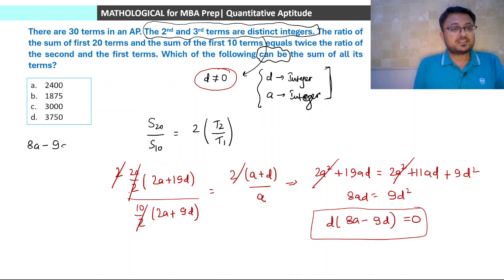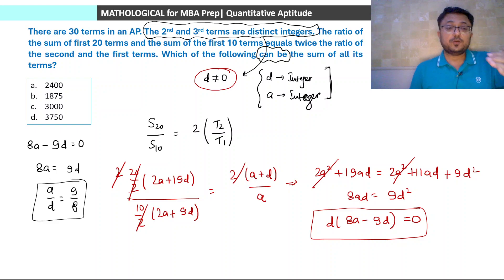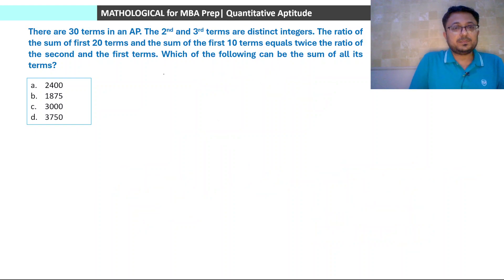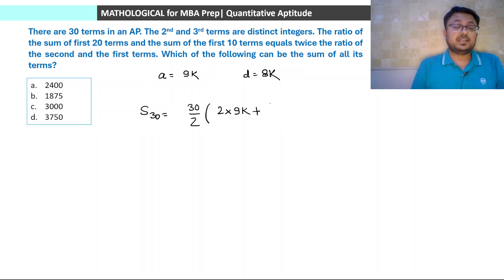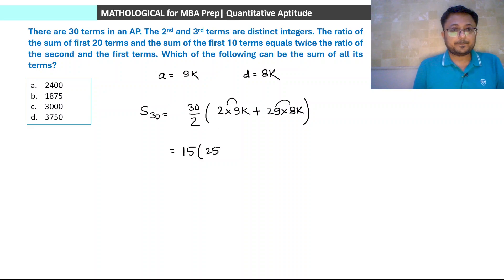8a minus 9d must equal zero. So a/d = 9/8. Since both a and d are integers, a = 9k and d = 8k for some integer k. The sum of all 30 terms: (30/2)(2 × 9k + 29 × 8k) = 15 × (18k + 232k) = 15 × 250k = 3750k. So the sum must be a multiple of 3750. If k = 1, sum = 3750. The answer must be a multiple of 3750. Option B cannot work because it would require k = 1/2, which is not an integer. So option D is the answer.